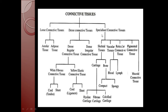Specialized connective tissue is classified into skeletal tissue, vascular tissue, and pigmented connective tissue. Skeletal tissue is classified into cartilage and bone. Bone is of two types: compact and spongy. Cartilage is of three types: hyaline cartilage, fibrous cartilage, and calcified cartilage. These are the various kinds of connective tissues.